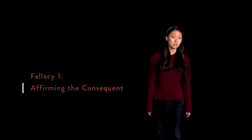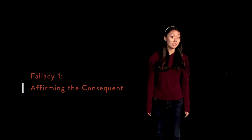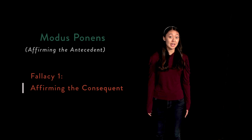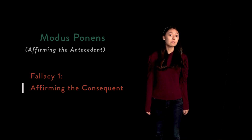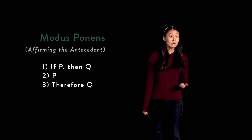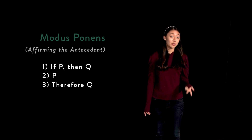The first of these two mistakes is called affirming the consequent. This name should be revealing once it is noted that modus ponens is alternatively referred to as affirming the antecedent. Modus ponens takes the form: 1. If P, then Q. 2. P. 3. Therefore Q.